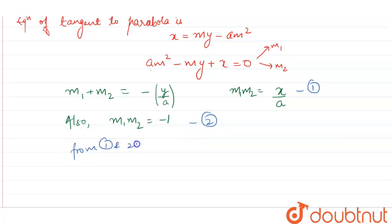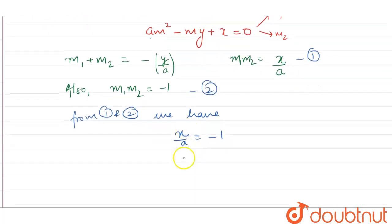x upon a is equals to minus 1, so x is equals to minus a.